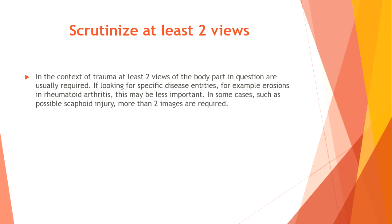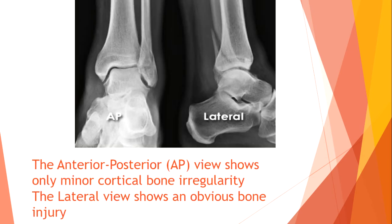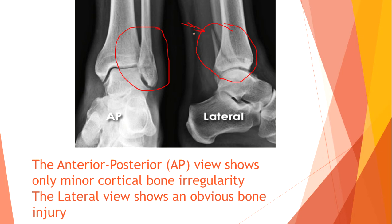Scrutinize at least two views. In the context of trauma, at least two views of the body part in question are usually required. If looking for specific disease entities — for example, erosions in rheumatoid arthritis — this may be less important. In some cases, such as possible scaphoid injury, more than two images are required. On the anterior-posterior view we have less obvious destruction of the distal fibula, but on the lateral view the broken bone is very obvious.